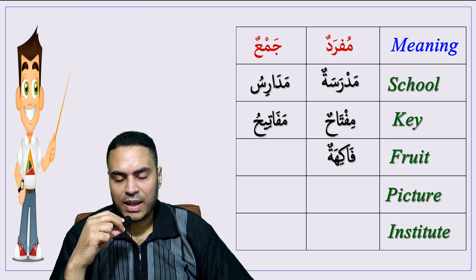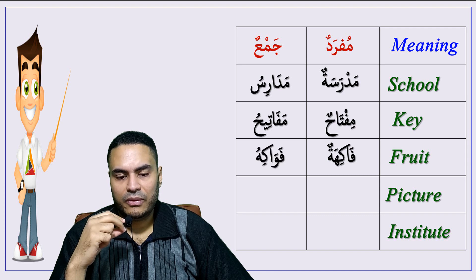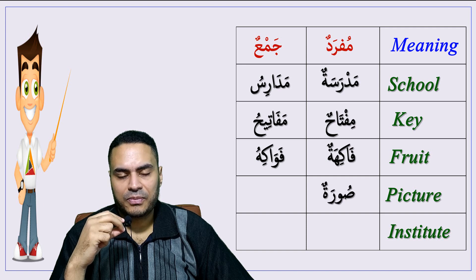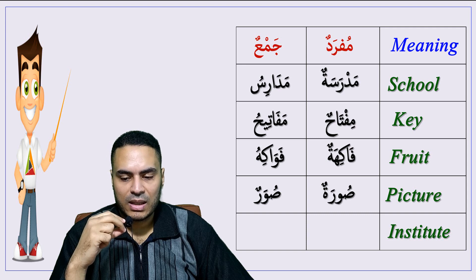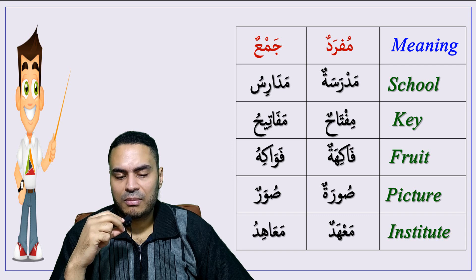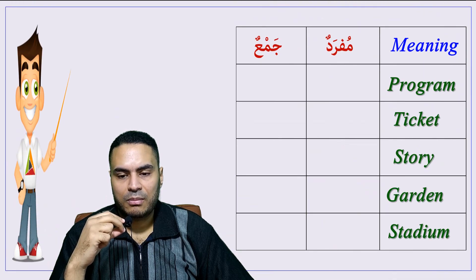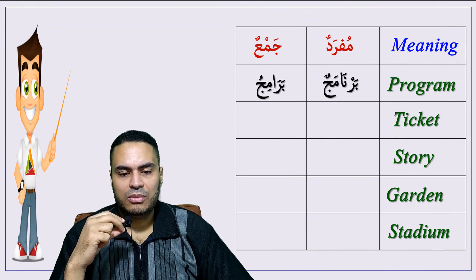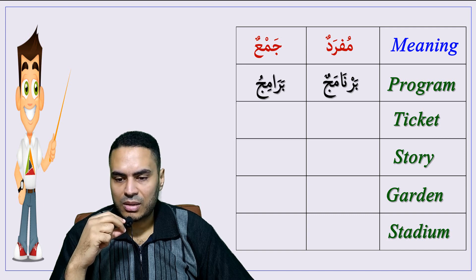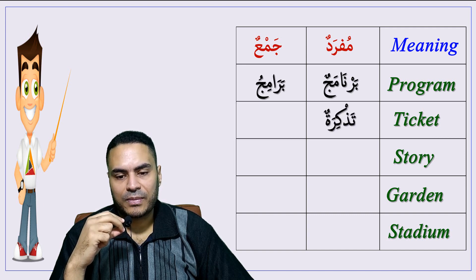Fruit — fakihatun, plural: fawakihu. Picture — suratun, plural: suwar. Institute — ma'hadun, plural: ma'ahid. Program — barnaamajun, plural: baramij. Ticket — tadhkiratun, plural: tadhakir.